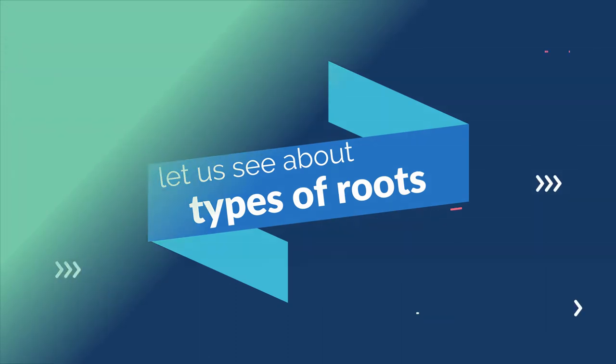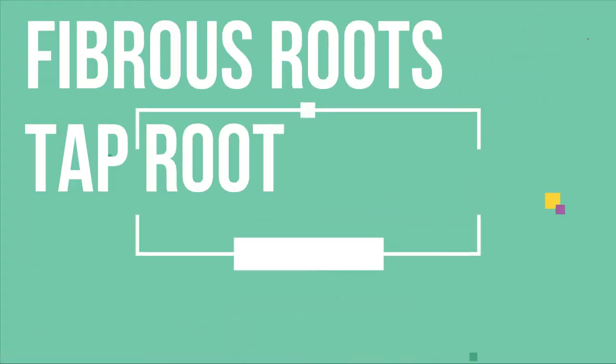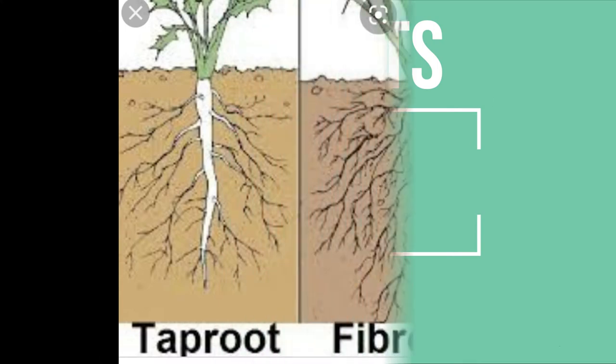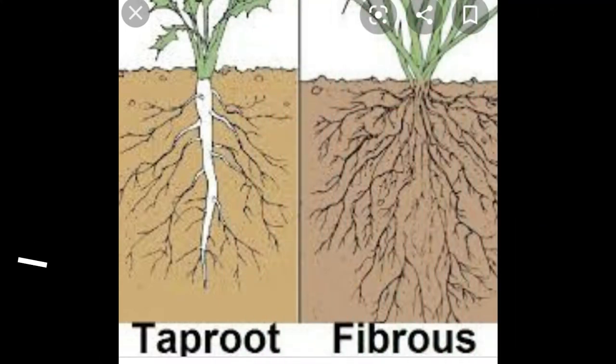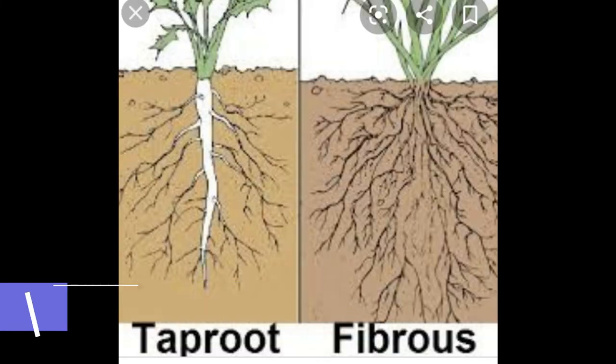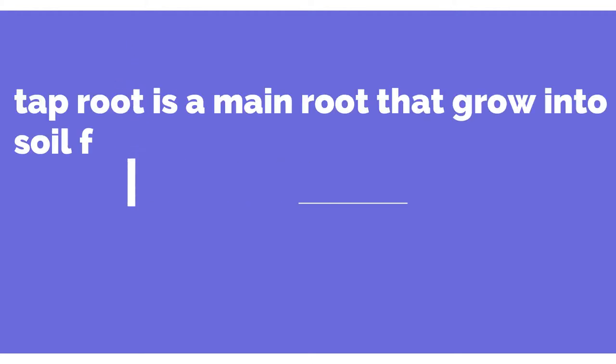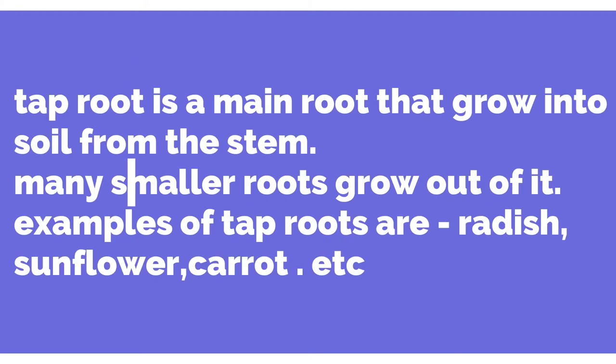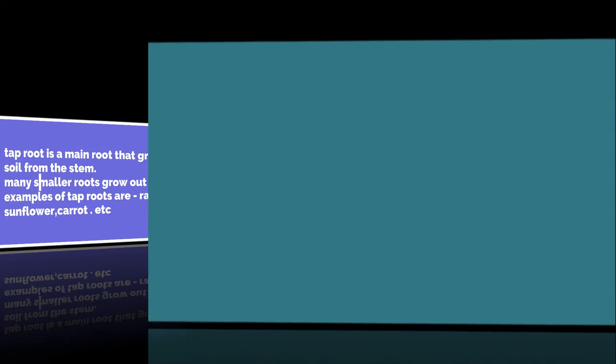Let us see about types of roots. Roots are of two types: fibrous roots and tap roots. Tap root is a main root that grows into the soil from the stem. Many smaller roots grow out from the tap root. Radish, sunflower, and carrot are some examples of tap roots.